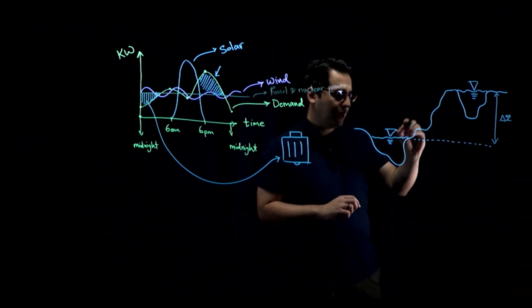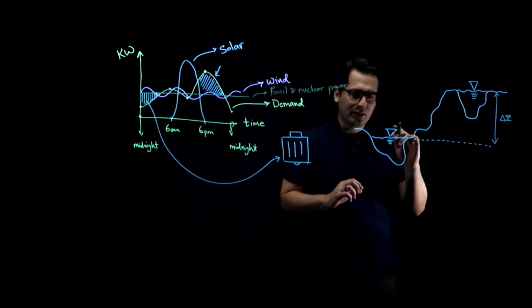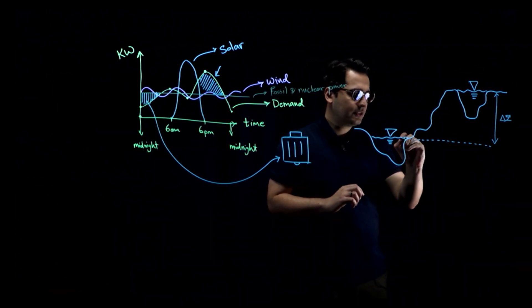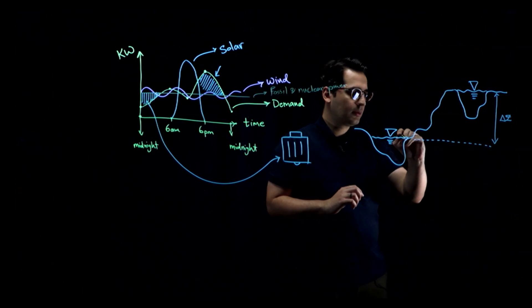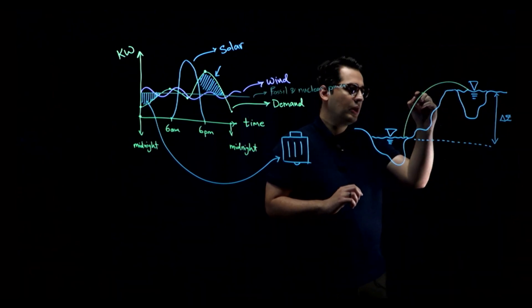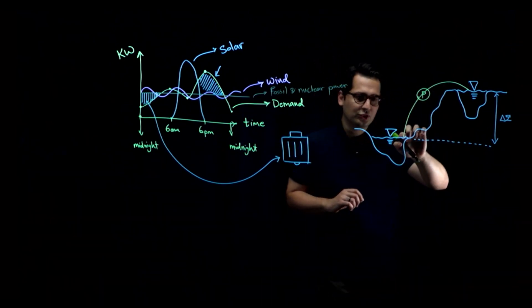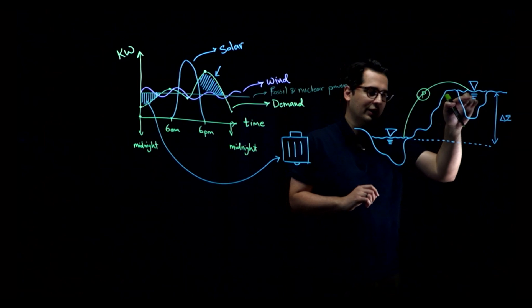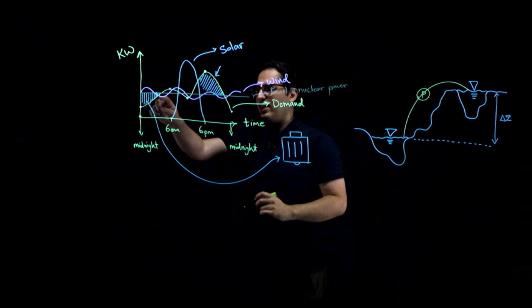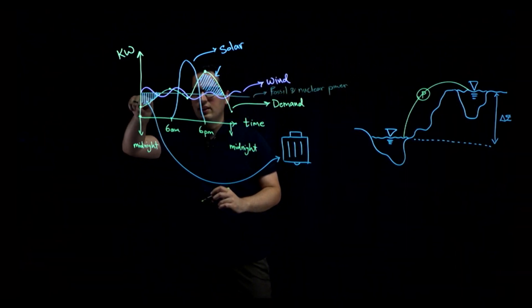You're going to have two lines, one pumping line and one turbine line. A set of pipes will pump water, and I'm going to write P over here. This is a pump. A set of pipes are going to pump water to the higher reservoir when you have excess electricity that you're not using during the day.